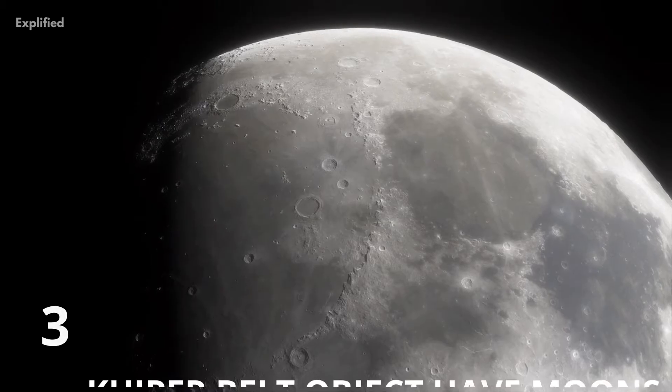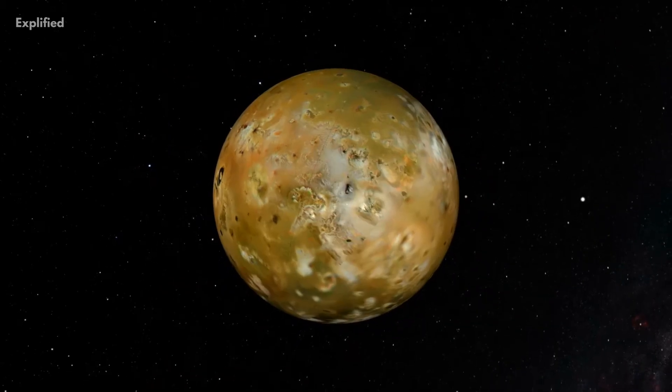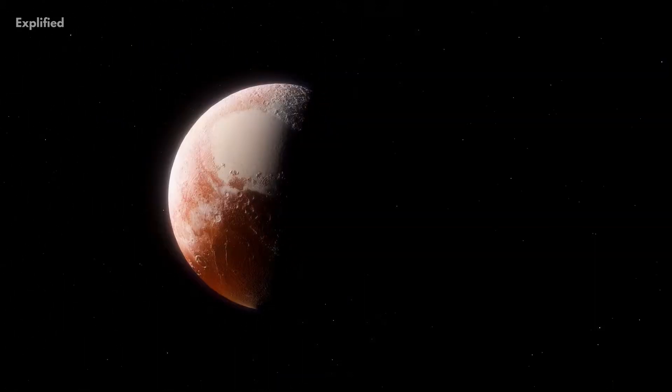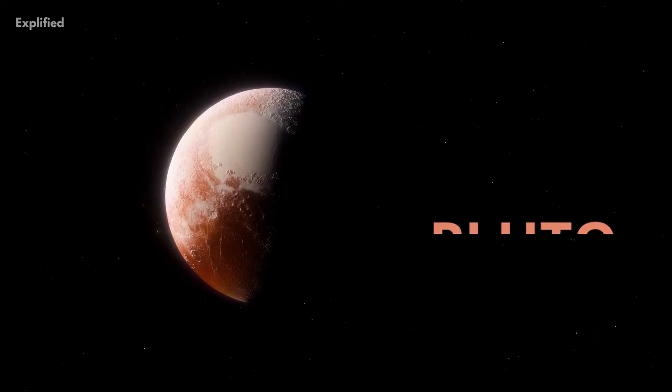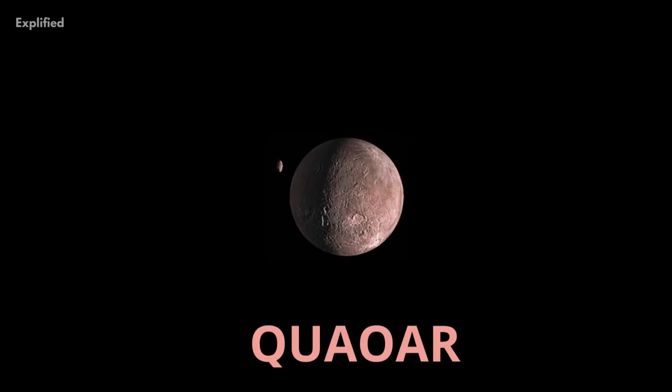Number 3. Kuiper Belt objects have moons. A large number of Kuiper Belt objects possess moons, or other binary objects. Some examples include our dwarf planet Pluto, and others like Eris, Haumea, Quaoar, etc.